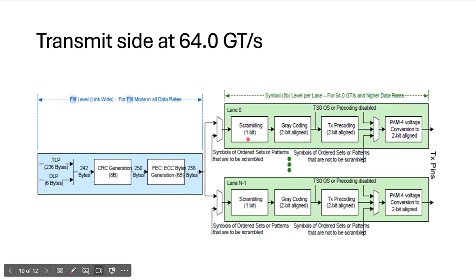The purpose of scrambling: if there is a repetitive pattern in your bit stream, at a certain point the energy spike will cause electromagnetic interference. To eliminate repetitive patterns, you perform scrambling on the data bits. All data bits are scrambled, but all order sets are not scrambled — only some order sets are scrambled. If scrambling is not needed, you can bypass it.